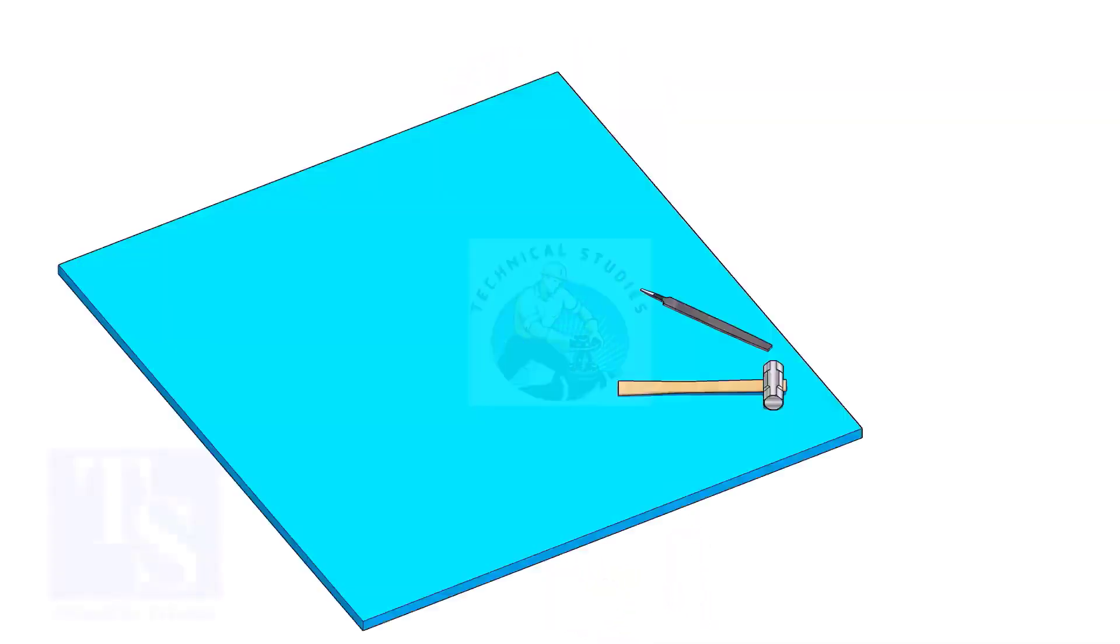The flange face may get damaged during fabrication. Use a non-metallic sheet like a Teflon sheet, thin hardboard, or piece of CNAF gasket sheet, as shown in the video.